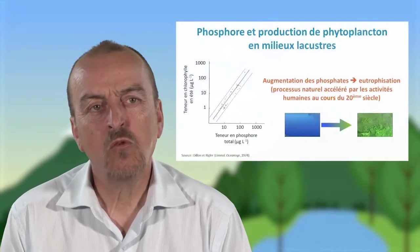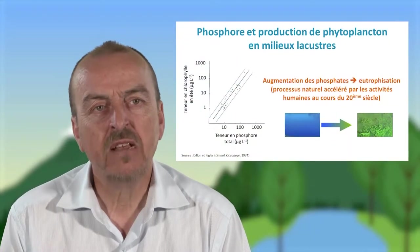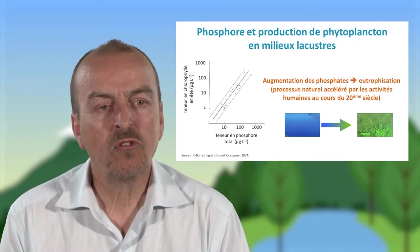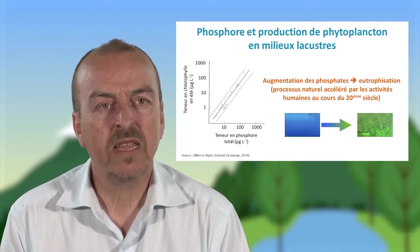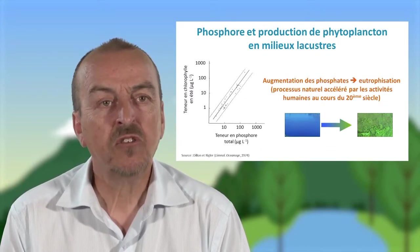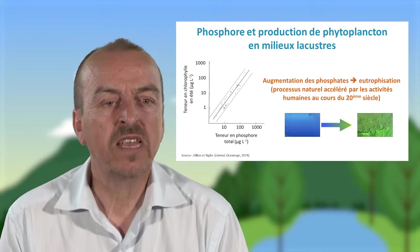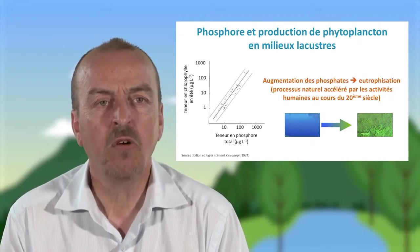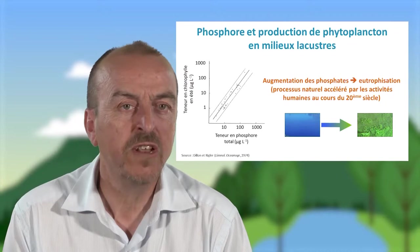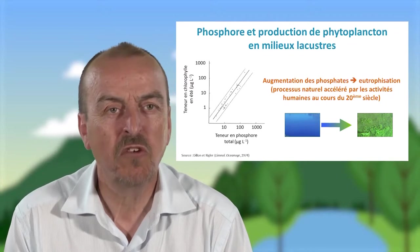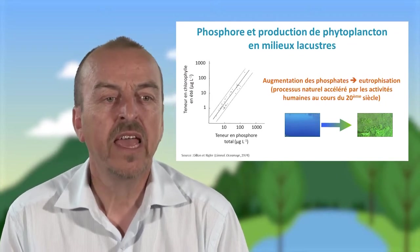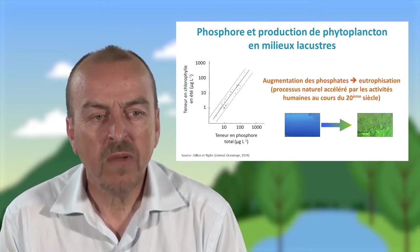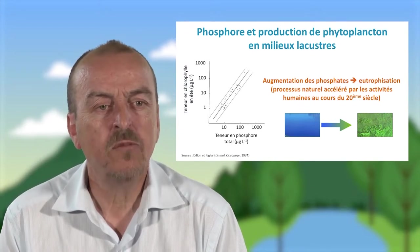On s'est rendu compte au cours du XXe siècle de l'importance des ressources en analysant un très grand nombre de lacs sur la planète. Lorsque les chercheurs ont cherché à regarder le lien entre certains nutriments — donc des nutriments ça peut être de l'azote, du phosphore, du potassium, etc. — et le développement des organismes, des producteurs primaires au sein de ces milieux aquatiques.